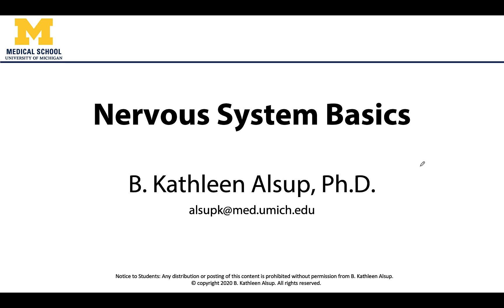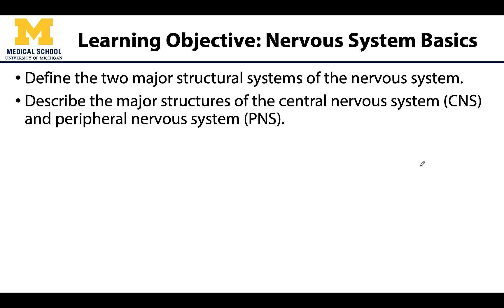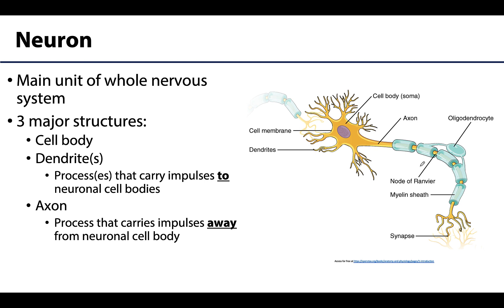Hello anatomy friends, this is Dr. Alsup. In this video we will talk about some of the very basics of the nervous system — some of that terminology you really need to know to get through much of the rest of the year in anatomy, and this will really play a role in terms of some of the clinical concepts as we move throughout the year. Let's start with the most basic of basics: the neuron or nerve cell, which is the main structural and functional unit of the nervous system. Neurons are really specialized for rapid communication.